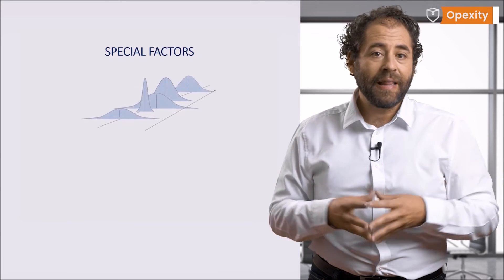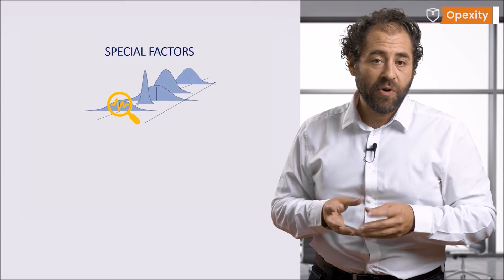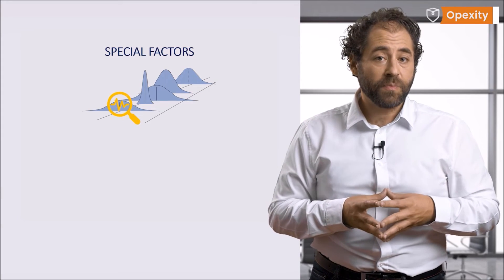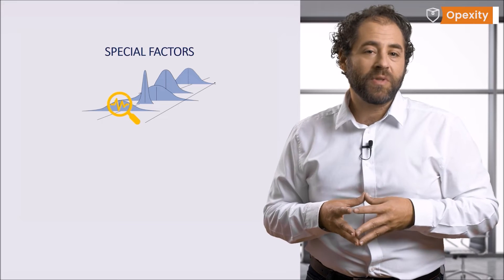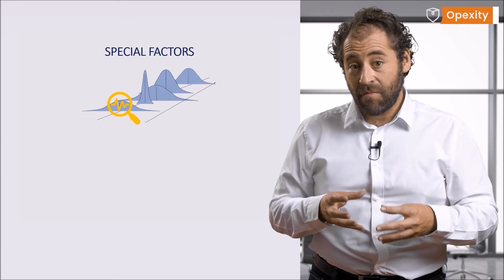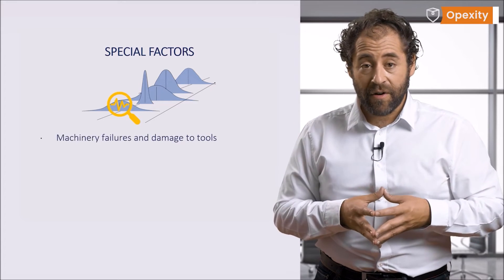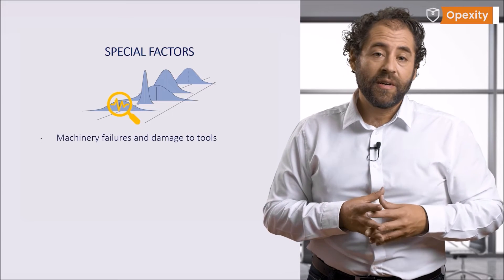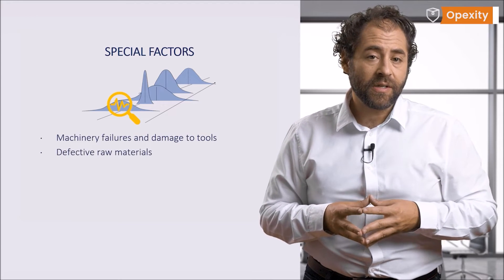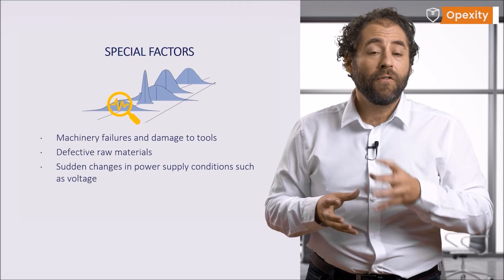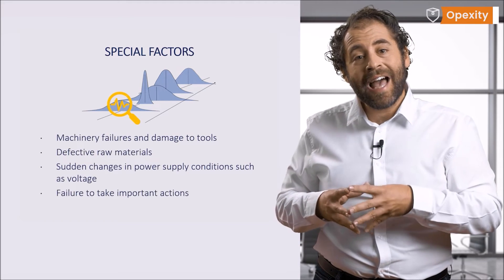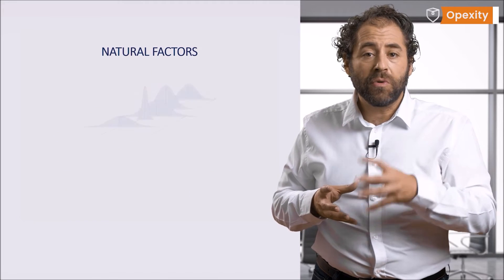Special factors may lead to quite large changes in the process. The values examined may have a large dispersion and may be repeated, but their causes are very specific. These can be machinery failures and damage to tools, defective raw materials, sudden changes in power supply conditions such as voltage, failure to take important action.